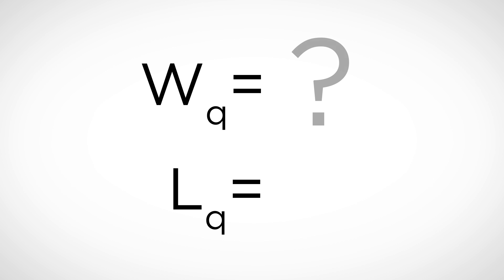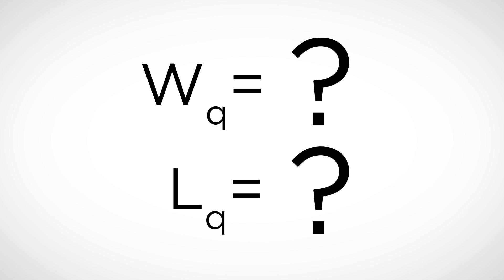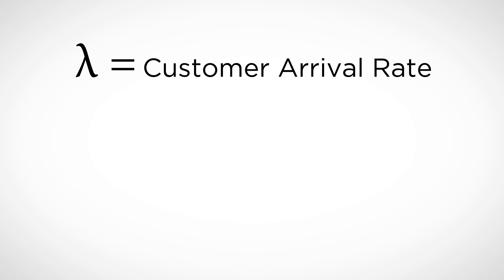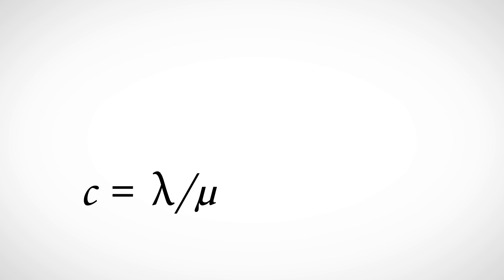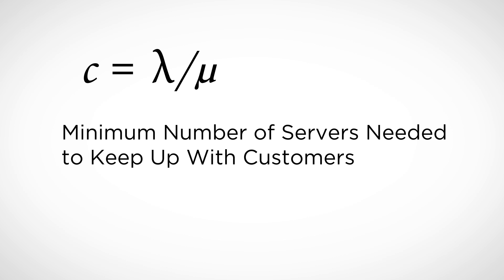Unfortunately, there are no simple formulas available to calculate the average number of customers waiting in the queue and the average waiting time in the queue for a multi-server queue. So I'll walk you through the steps to determine those values. We again let lambda denote the average arrival rate and mu denote the average number of customers a cashier can serve per unit time. We then define a quantity C, which is equal to lambda divided by mu — the arrival rate divided by the service rate. This quantity represents the minimum number of servers the system would need in order to ensure that all customers are able to be served.